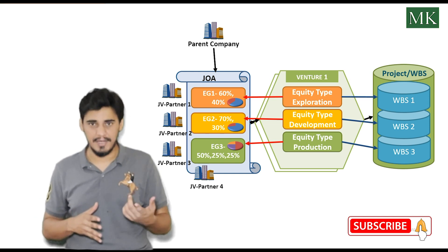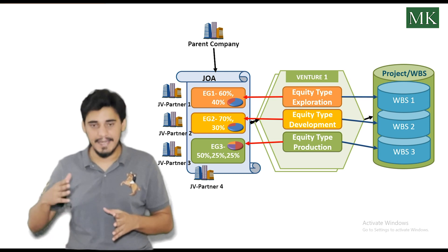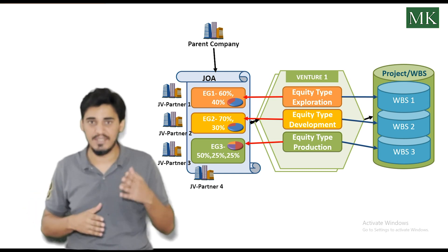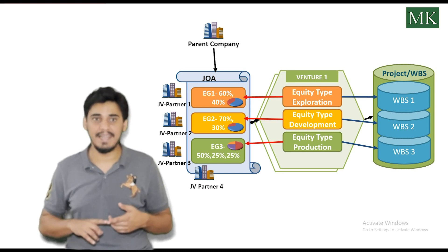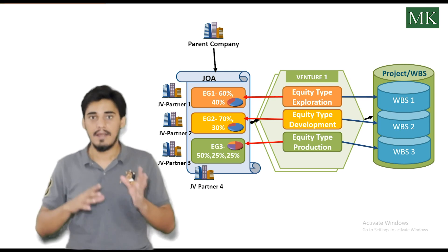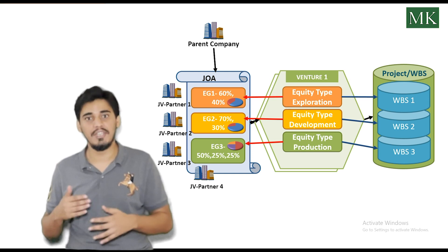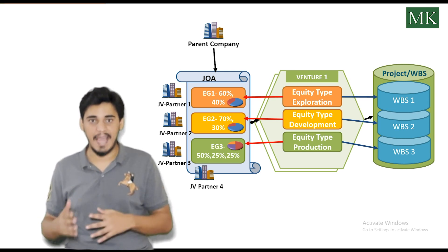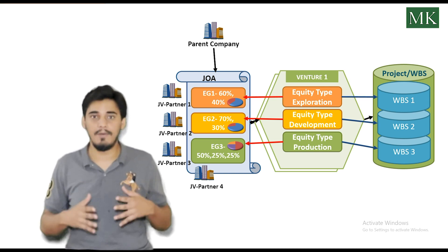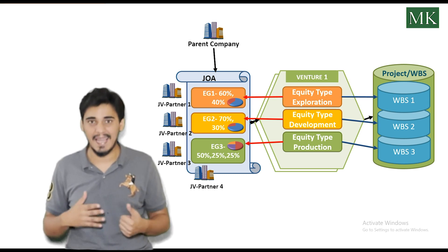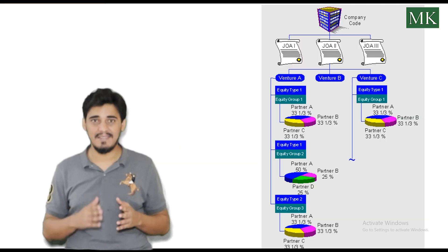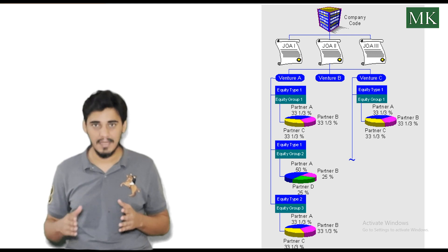In the joint venture master data, we see equity types against which we assign equity groups created in the joint operating agreement. For example, for equity types E and A we assign equity group OG1; for equity types D and P we assign equity group OG2; and for equity types O and P we assign equity group OG3. This determines the joint venture business partner number and their equity share maintained in those equity groups. This image is taken from help.sap.com, which also explains the relationship between the different joint venture master data.